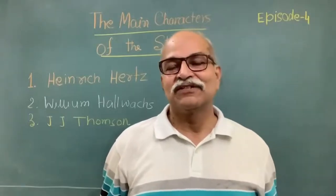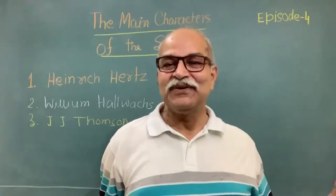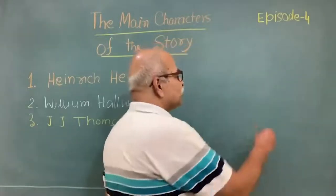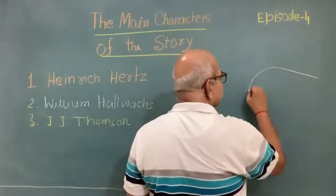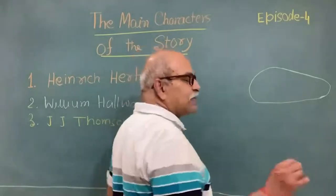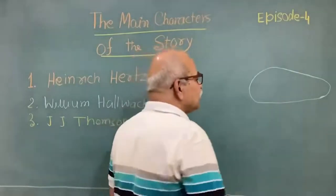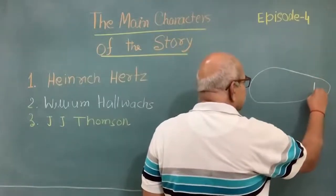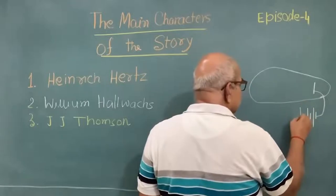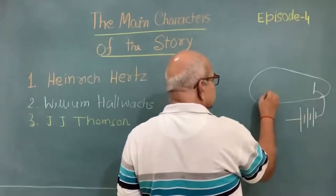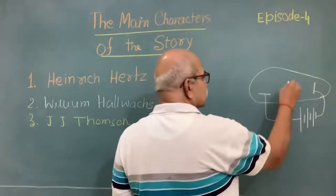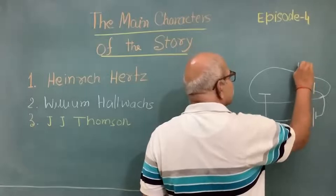These tiny particles, which he called corpuscles, were part of all materials — a big discovery. If we go a little bit into that history, it starts with Crookes. Crookes was the person who made varieties of glass chambers known as Crookes tubes. The basic elements are: a cathode connected to the negative terminal of a large potential difference, an anode somewhere, and a connection to a vacuum pump to reduce the pressure.